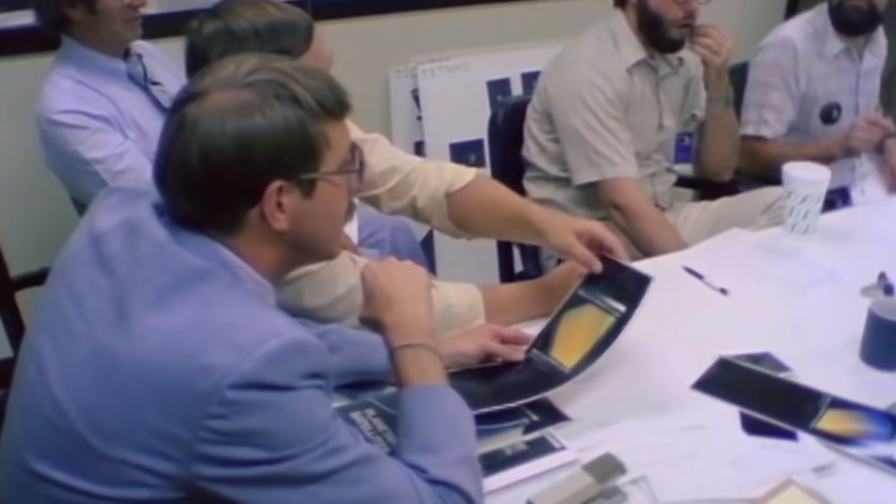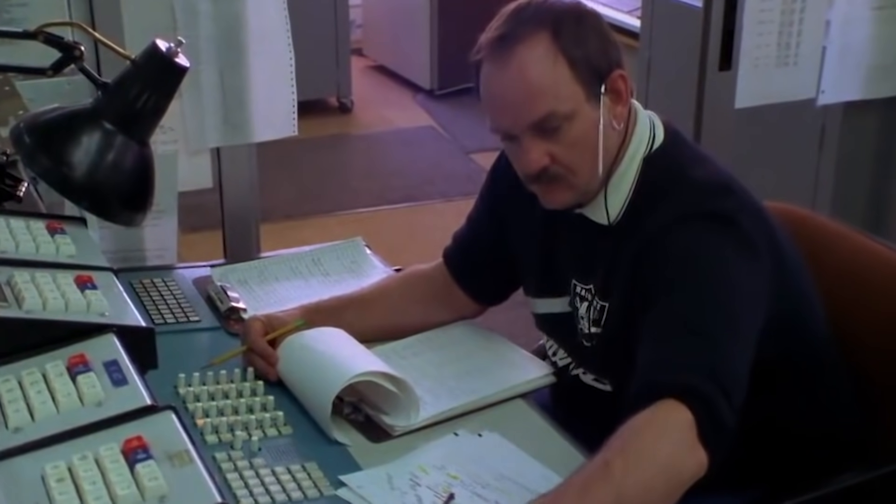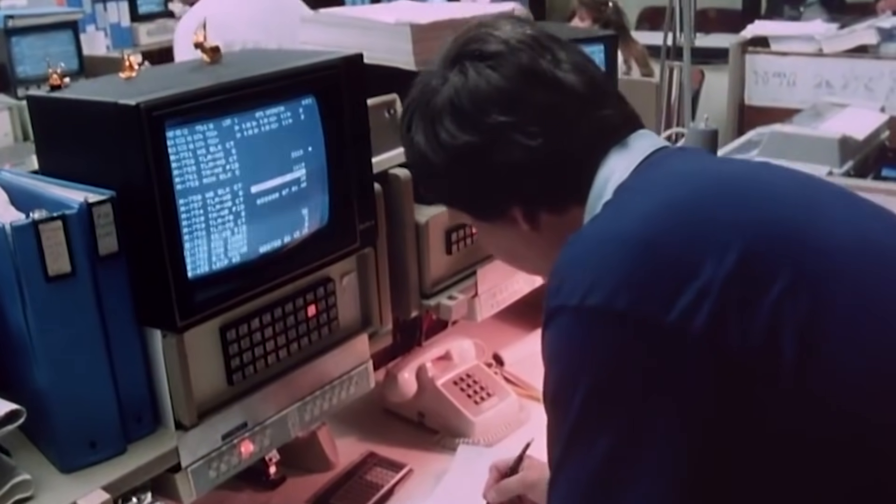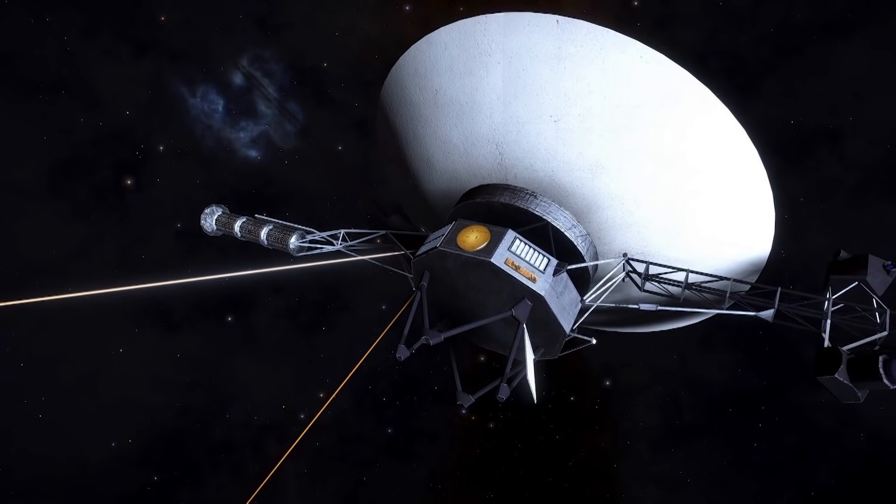Mission workers then even doubted that Voyager 1 had crossed the border. The information was inexact since the equipment on the first probe malfunctioned back in 1980, and all hope was on Voyager 2, which had corrected plasma measuring devices onboard.